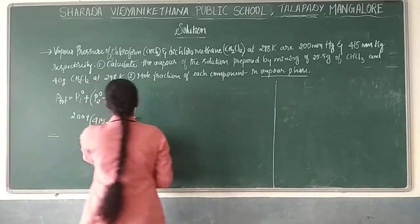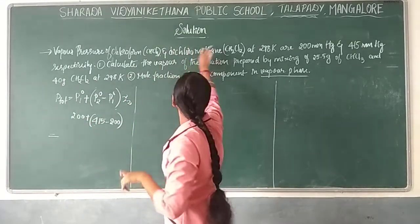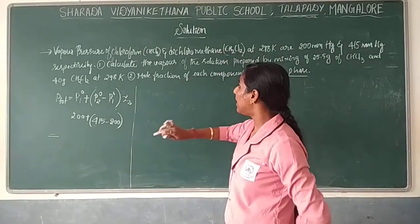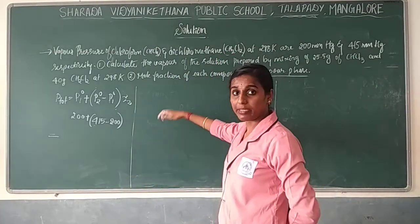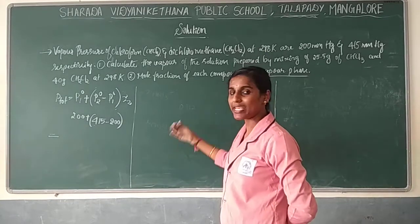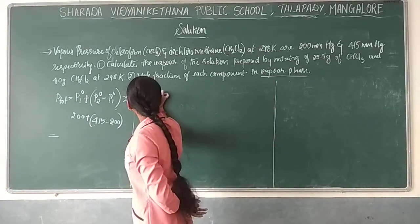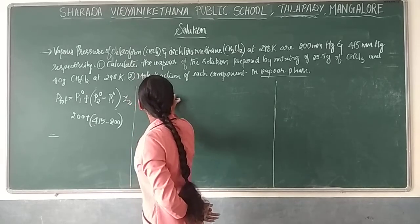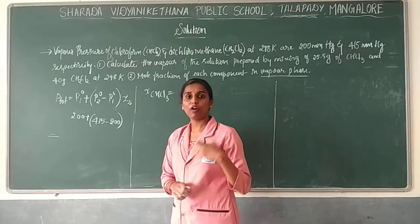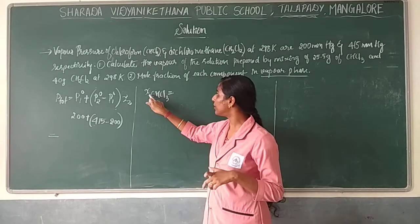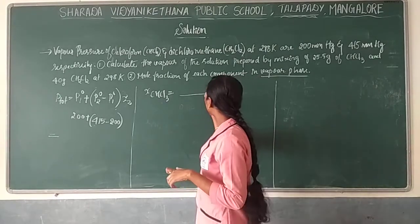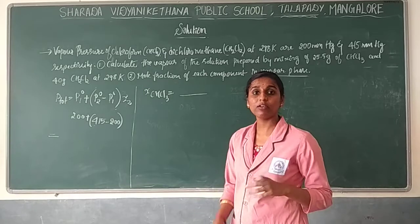X2 is the mole fraction of the second component, which is dichloromethane. We'll find mole fractions for both components since that will make things easier. The mole fraction formula is: number of moles of the particular component divided by the total number of moles. But the number of moles was not directly given, so we need to calculate them.